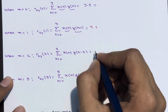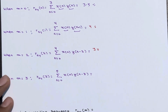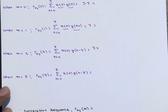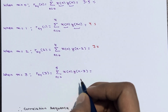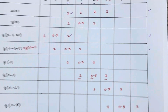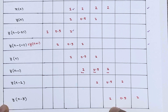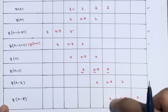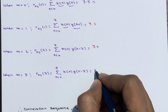When m = 3, we need x(n) times y(n-3). There is only one common point at n = 3. So 2 times 1 equals 2. Therefore rxy(3) = 2.